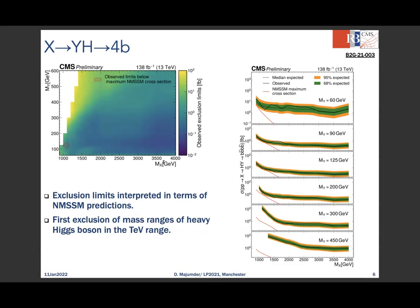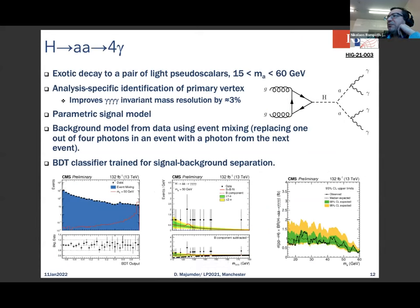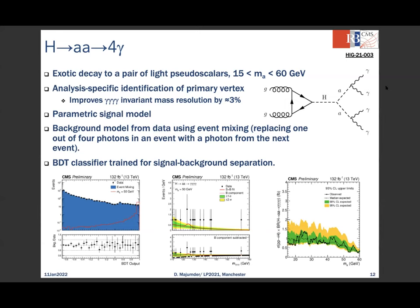Nikos asks about slide 12 (h→4γ analysis): what kind of trigger is used? The speaker explains the standard diphoton trigger is used, with two photons having pT thresholds of 18 GeV and 30 GeV respectively, along with photon shower shape variables in the trigger.